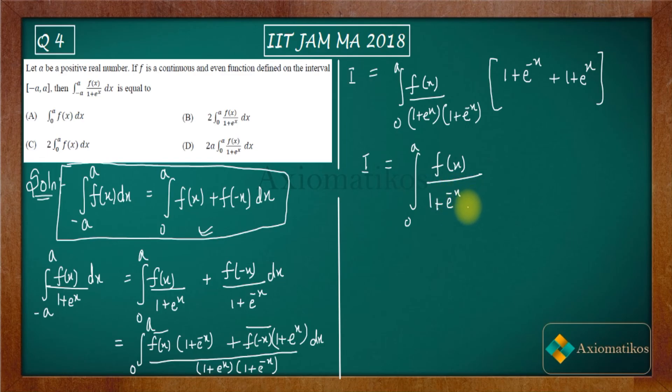Here you will get 1 plus e to the power minus x plus e to the power x. And e to the power x plus e to the power minus x will get you e to the power 0.